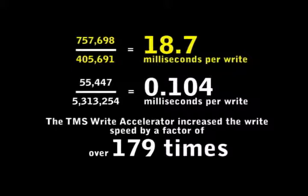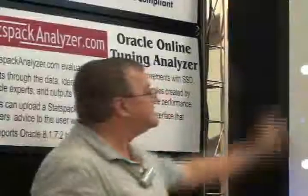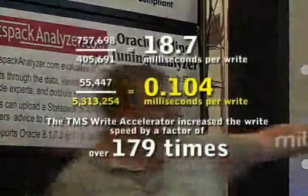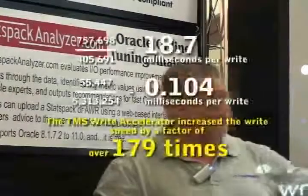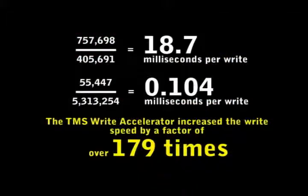For the disk-based system, the write time to complete a redo write was 757,698 centiseconds divided by 405,691 writes, for a value of 18.7 milliseconds per write. The time per redo write with the TMS write accelerator was 55,447 centiseconds for 5,313,254 writes, or a write time of 0.104 milliseconds per write — speeding up our writes by a factor of 179 times.